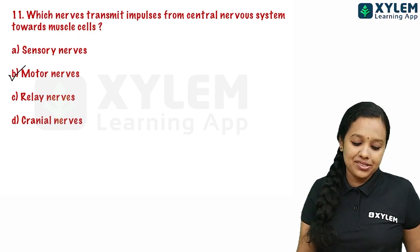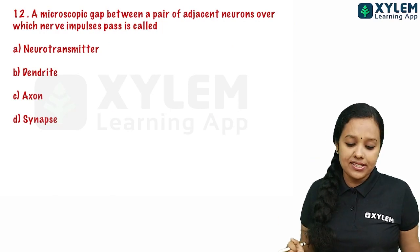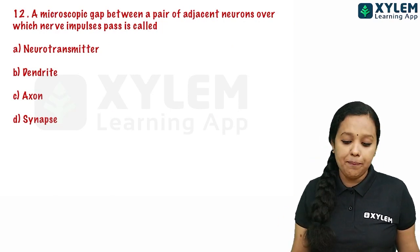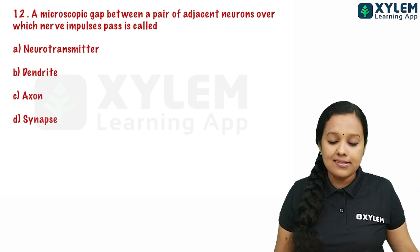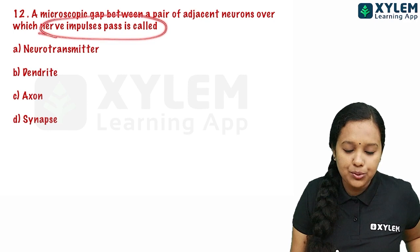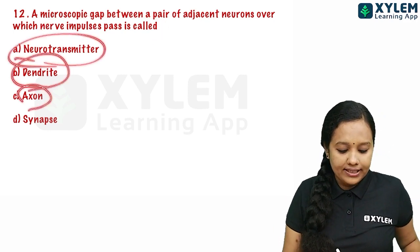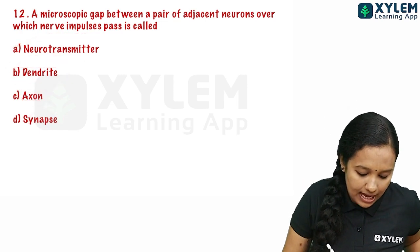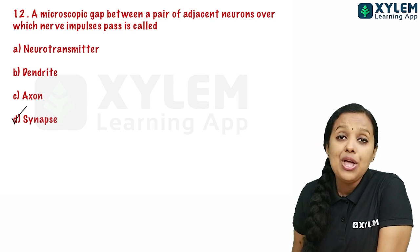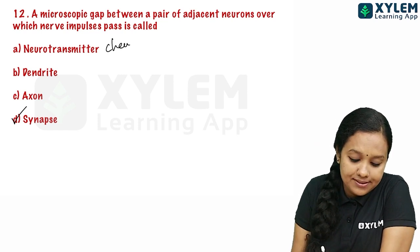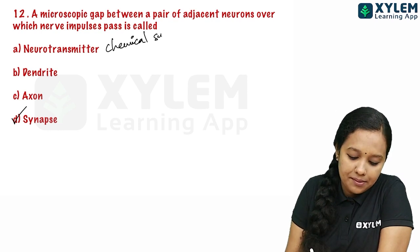The twelfth question: a microscopic gap between a pair of adjacent neurons over which nerve impulses pass is called — neurotransmitters, dendrite, axon, or synapse. The gap between adjacent neurons is called synapse. Neurotransmitters are the chemical substances produced at the synaptic knob.